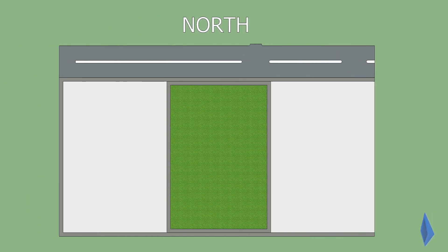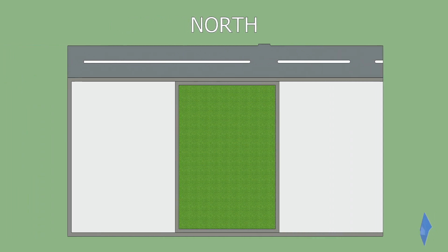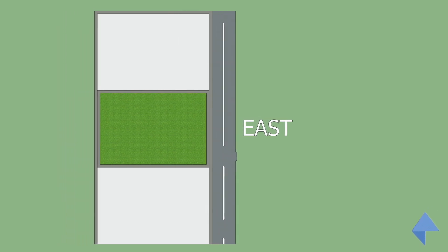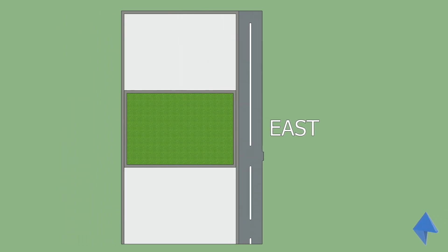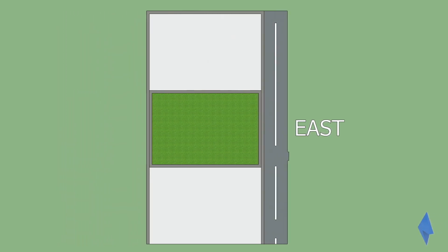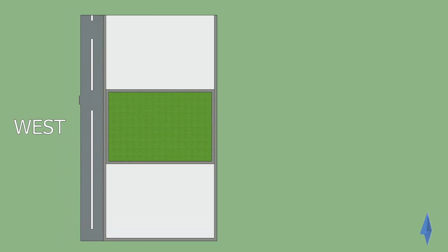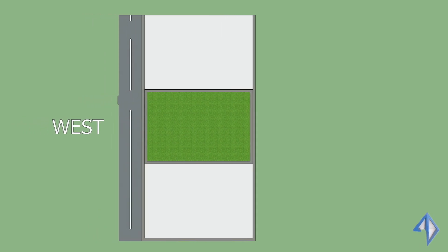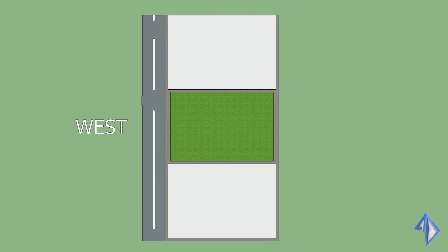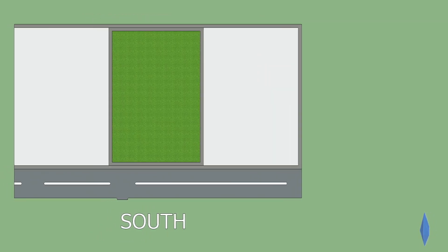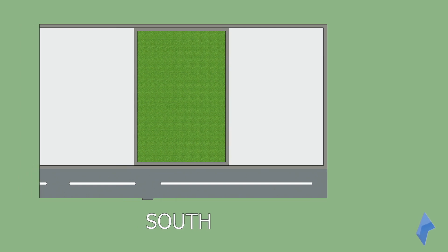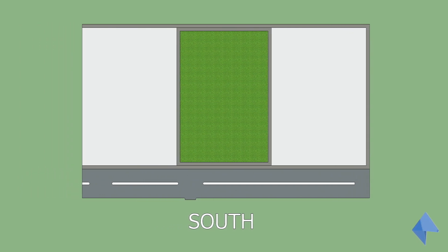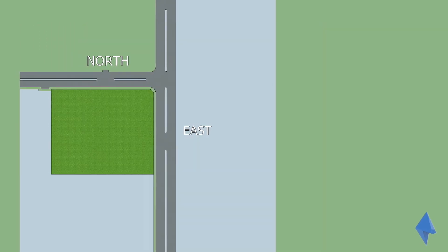that plot is very auspicious and good. If you have a roadway on the east side of your plot, that plot is also good. If you have a roadway on the western side of your plot, it's an average plot. If you have a roadway on the south direction, you should better avoid that plot.